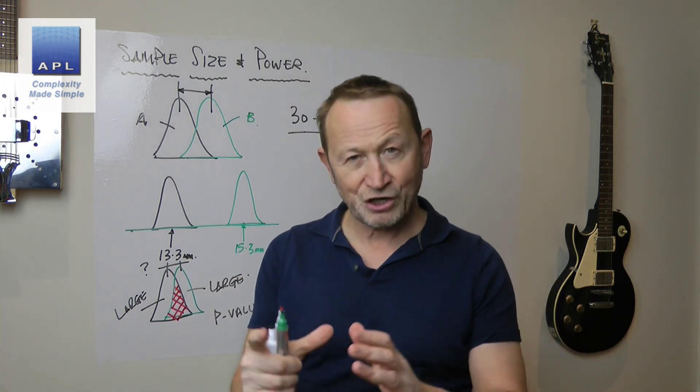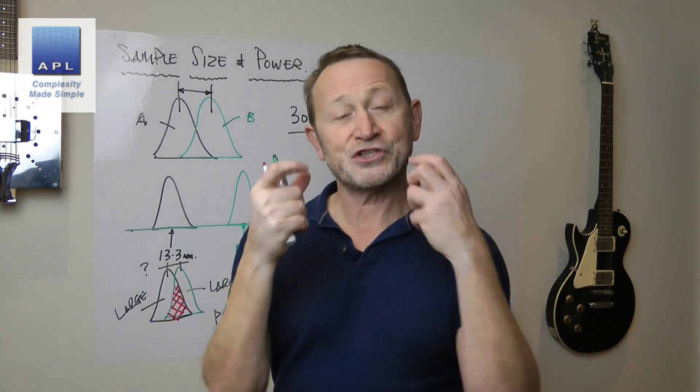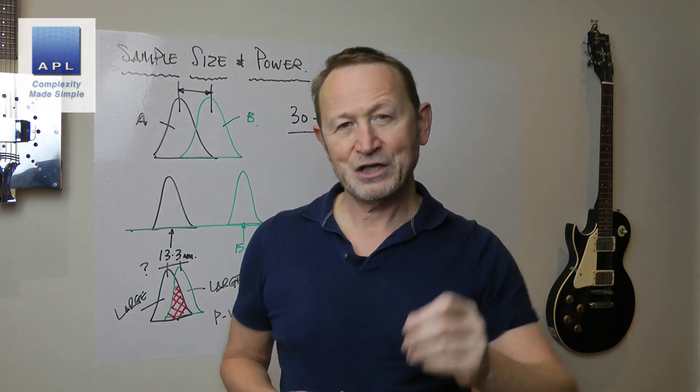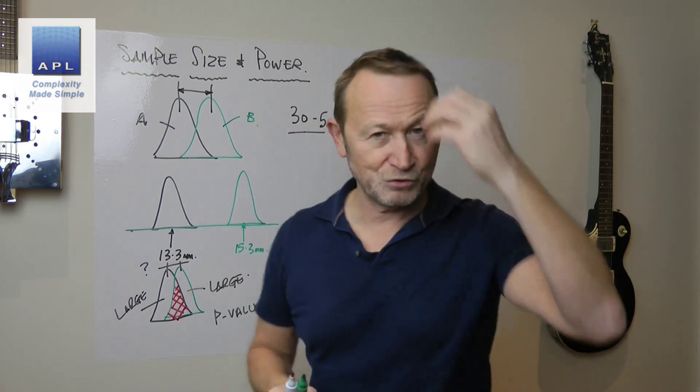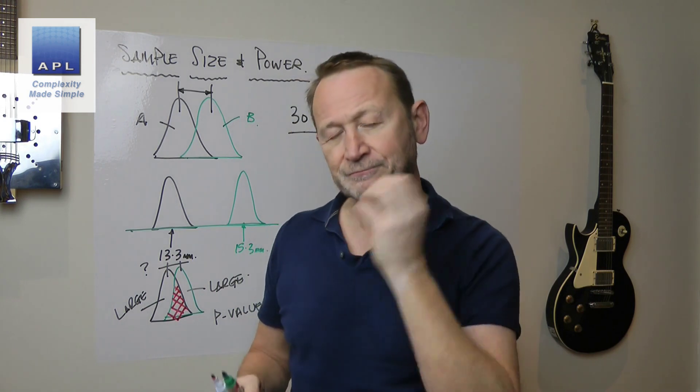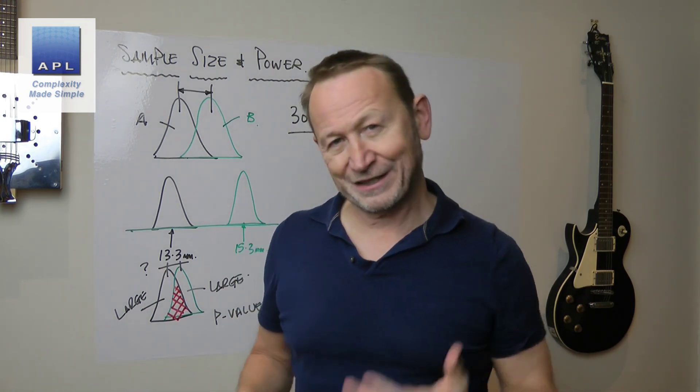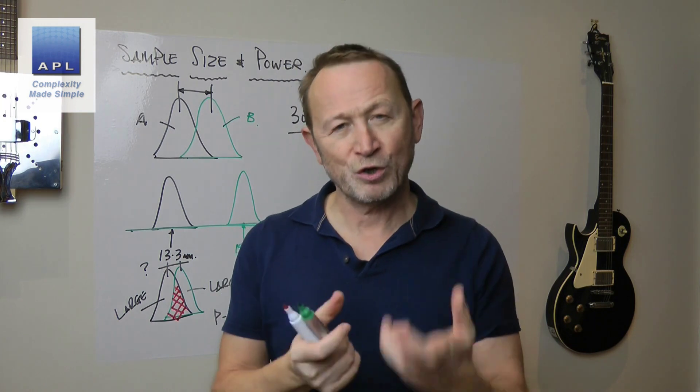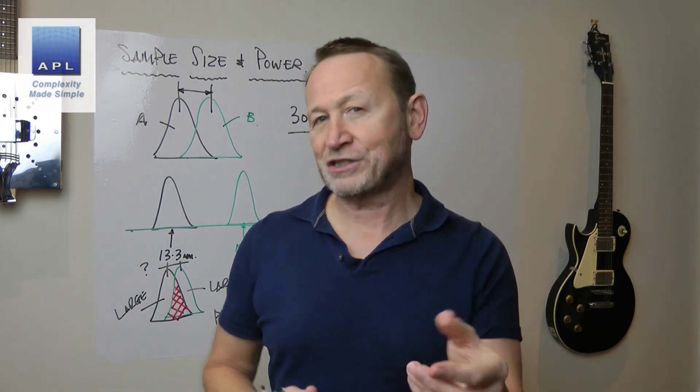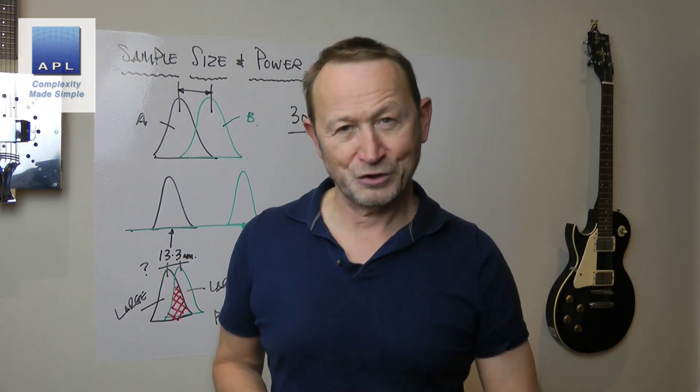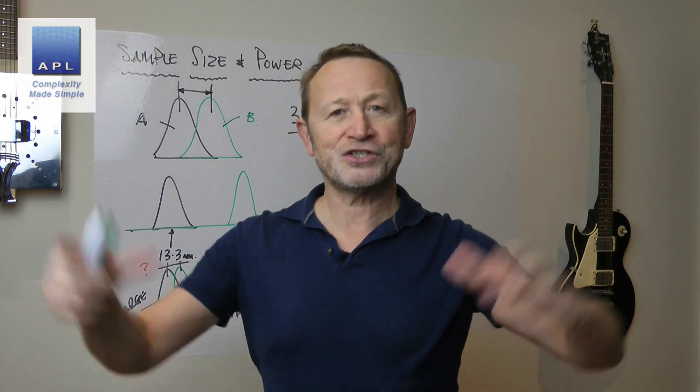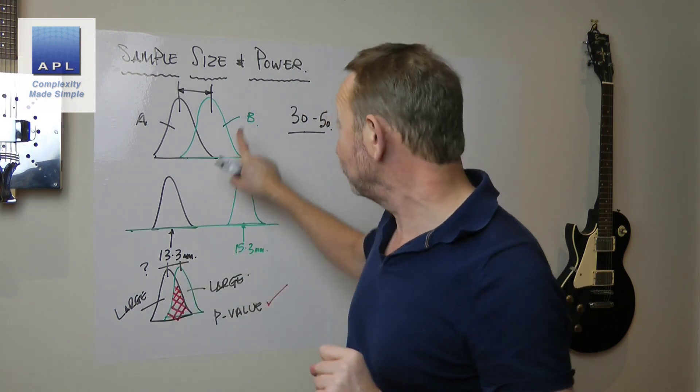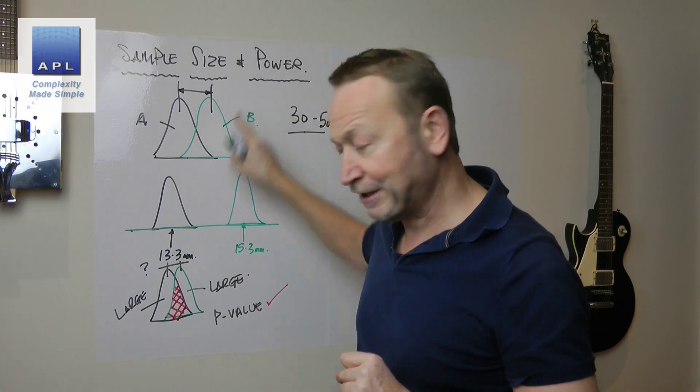The power of a sample size is the ability for it to see smaller shifts. One of the things that you will often do before you start when you're doing a test is to say, how small a shift would be significant to me? So if you decide that the shift here of just 0.1 of a millimeter would be significant, and you think your test is only likely to move by 0.1 of a millimeter, you would want a sample size that can see that shift because there's going to be lots of overlap here, lots of confusion. You want a more powerful sample size.